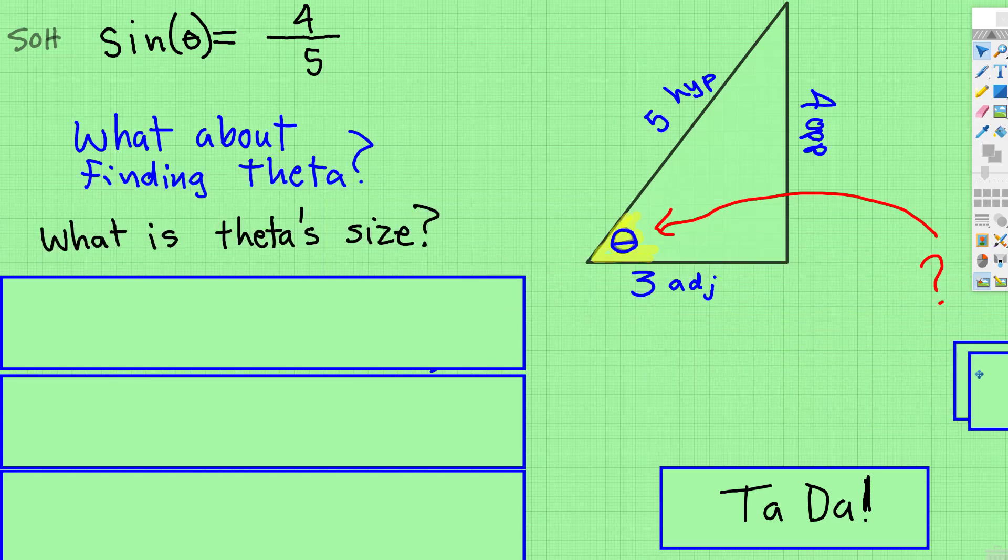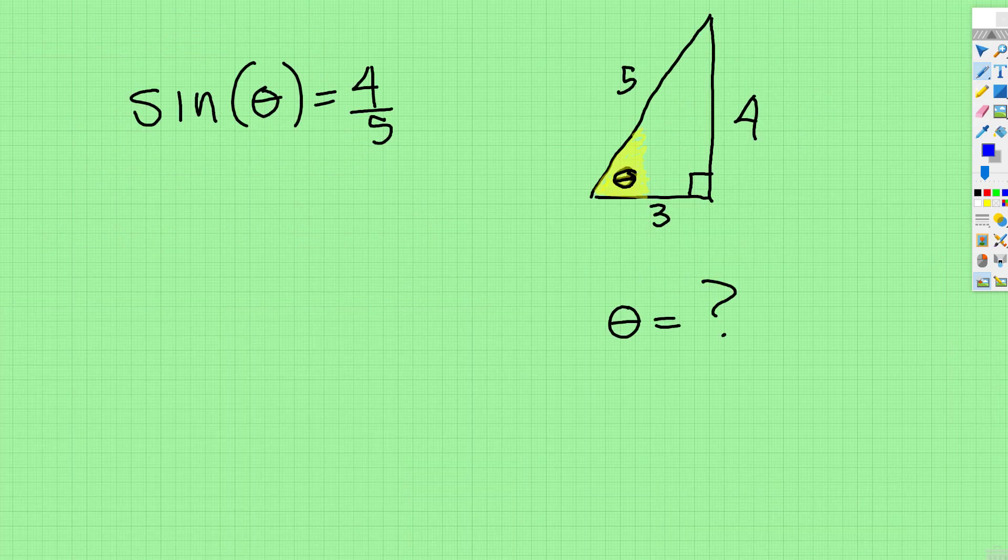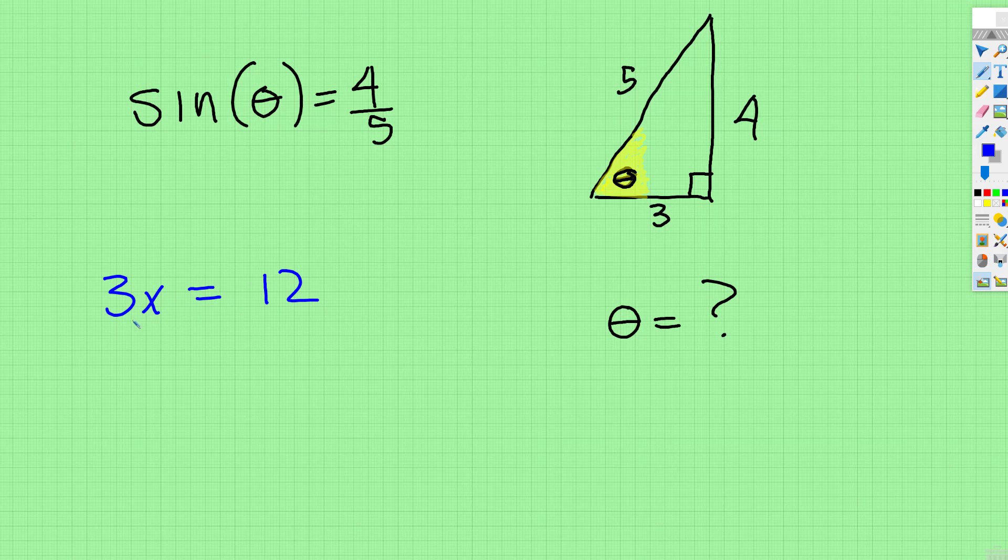Well, remember in solving problems, you always do the inverse operation. So if you have 3x is equal to 12, the inverse of multiplying 3 is dividing 3, or if you didn't do it that way, you could multiply by the reciprocal. Remember, division is the same as multiplying by the reciprocal, but whatever you do to one side, you do to the other.